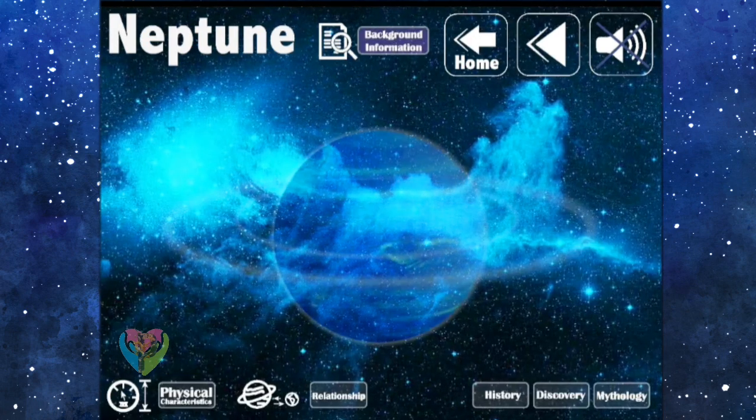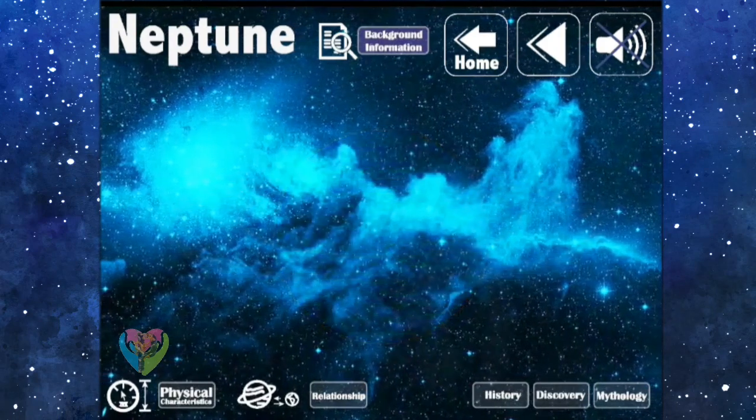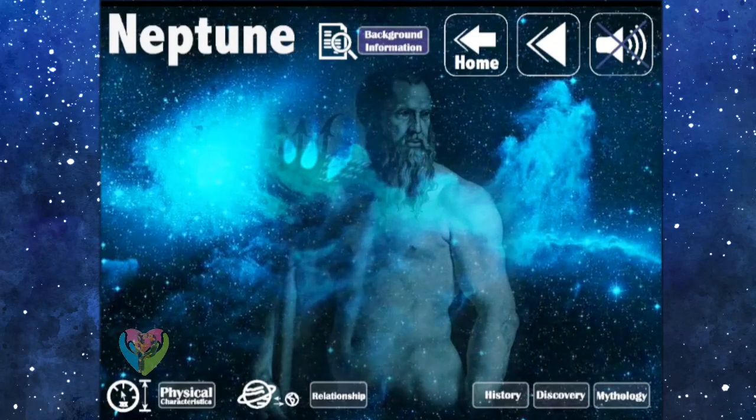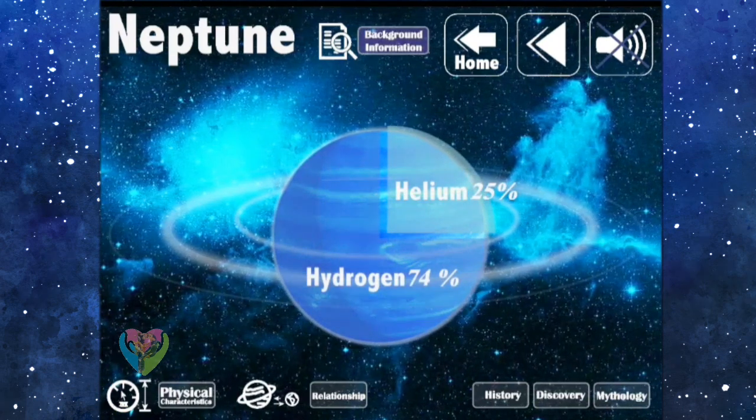Background Information: Neptune is the farthest planet in the solar system. Neptune is named after the Roman god of the sea. Neptune is blue because the main elements of the outer atmosphere are hydrogen, helium, and methane.